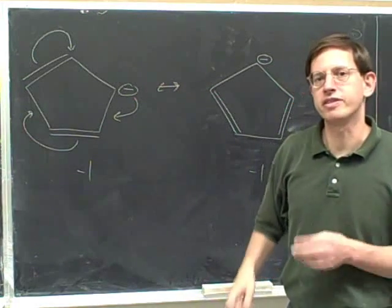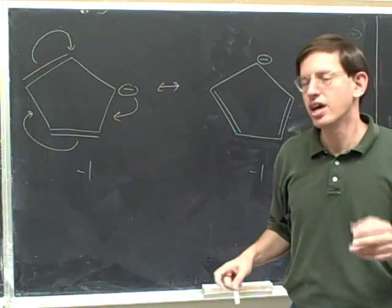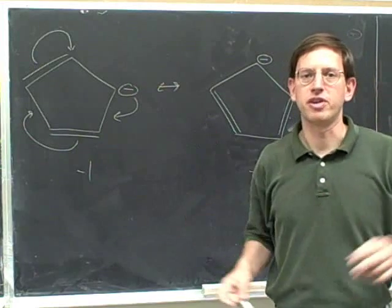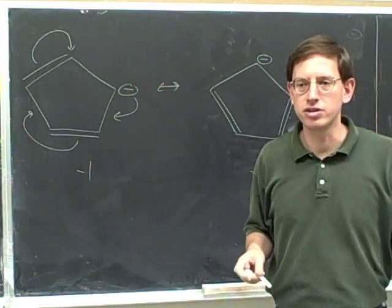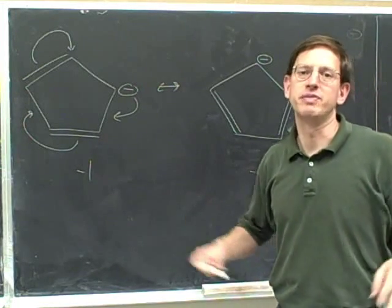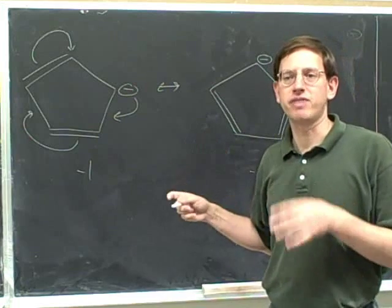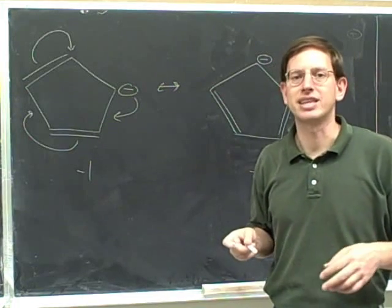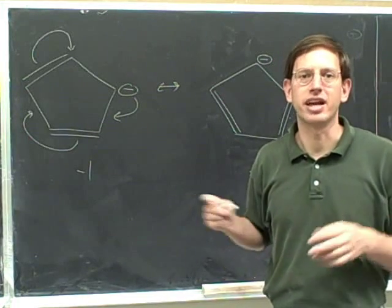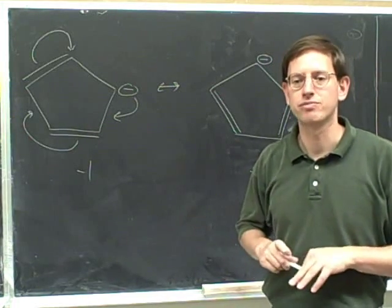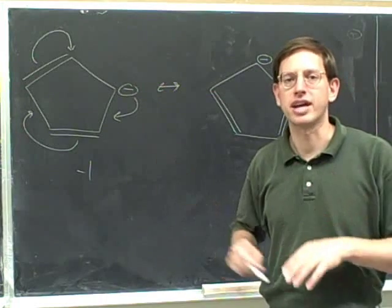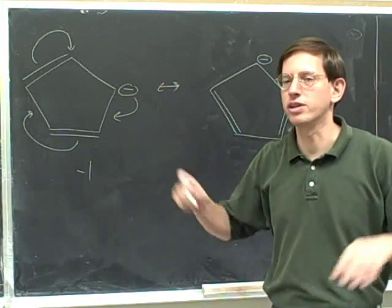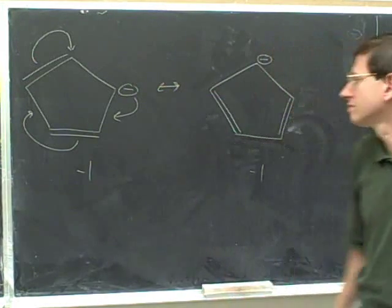So we've learned what to do when you have a cycle of arrows, but make sure that it really is a cycle. If you have a cycle of arrows, you don't need to change any charges. But if it's not a cycle of arrows, then you need to change the charge at the initial tail and the final head. So look at the diagram carefully to see if the arrows are really forming a cycle or not.